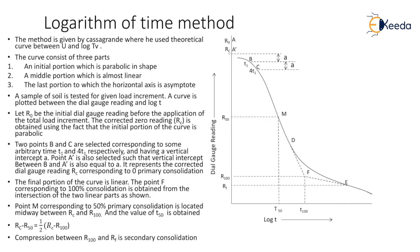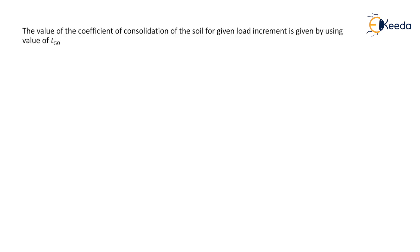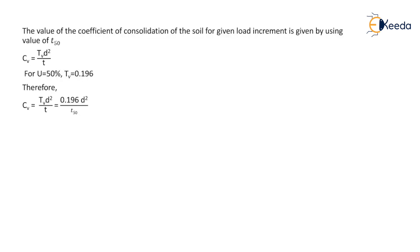The value of the coefficient of consolidation for the given load increment is given using the value of T50. The formula is Cv = Tv × D² / T. For U equal to 50%, the value of Tv is 0.196. Therefore, Cv = 0.196 × D² / T50. The drainage path distance D is determined in the same way as discussed in the first method.